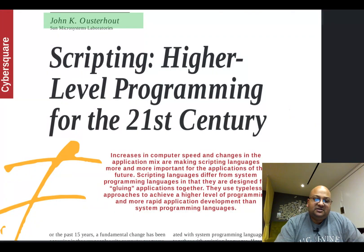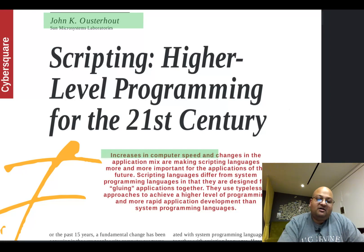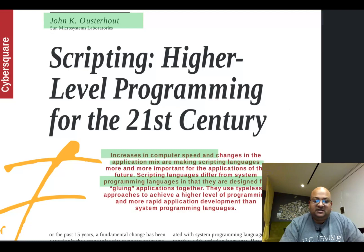This paper was written back in 1998, and it argues for why scripting languages will become more and more dominant. This was back when clock speeds were steadily increasing and Moore's law was still in full effect. Ousterhout argues that increases in computer speed and the nature of applications being written will make scripting languages more and more popular. He also talks about the differences between scripting languages and so-called system programming languages.